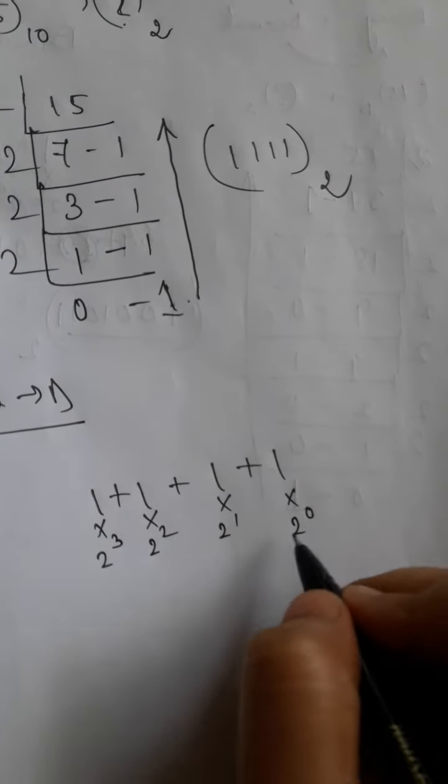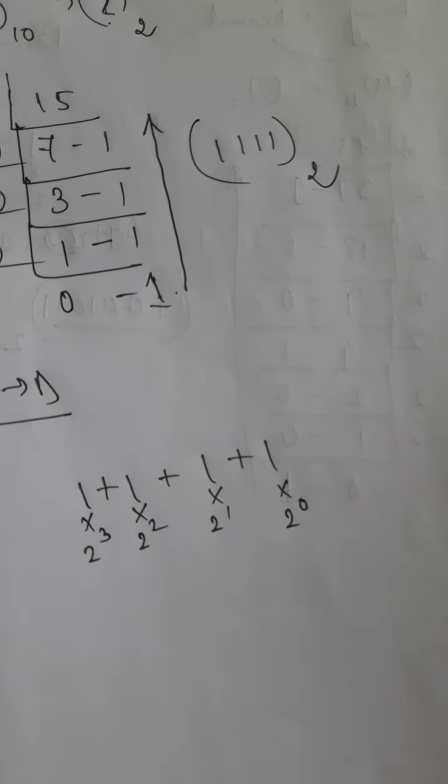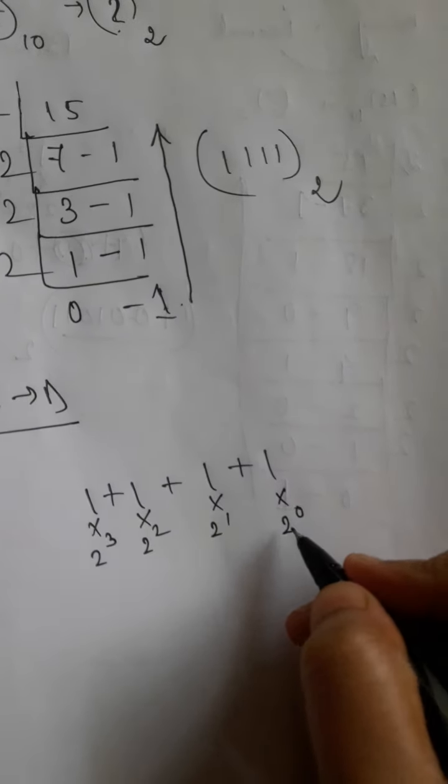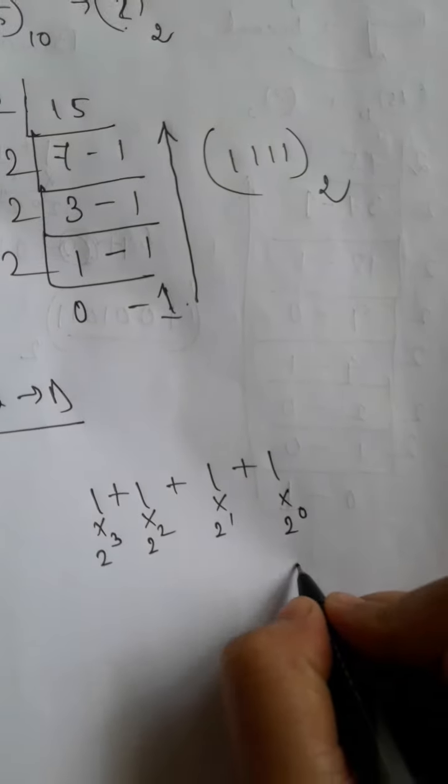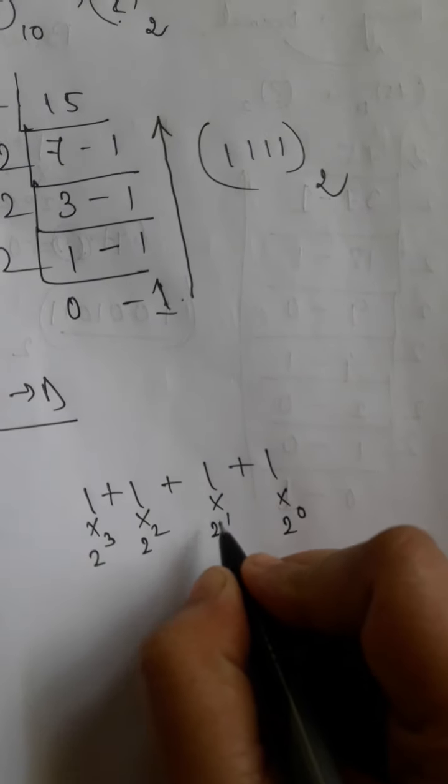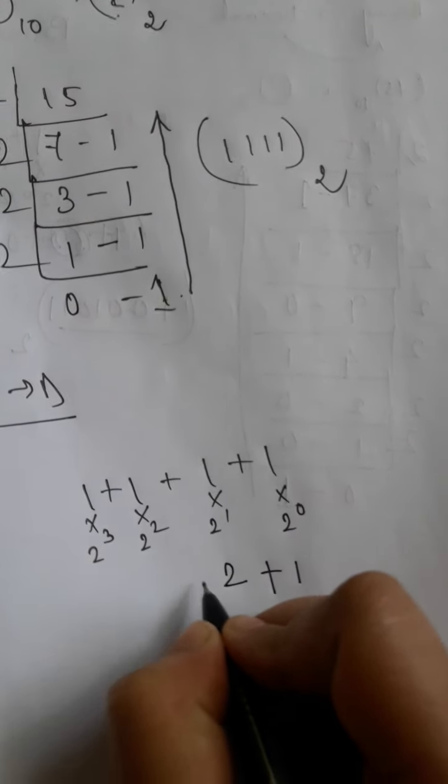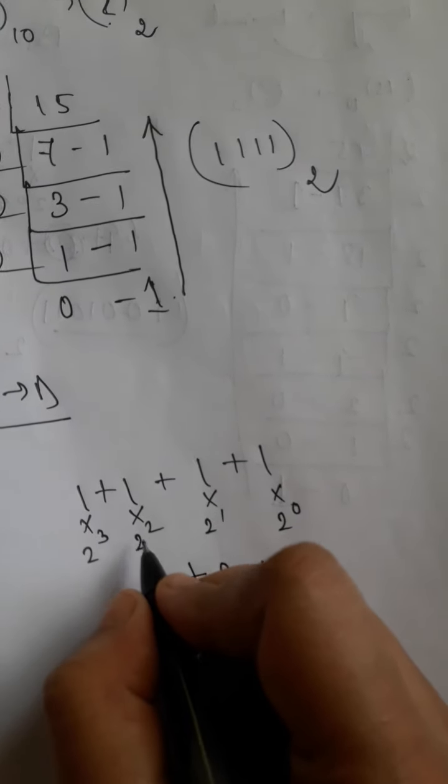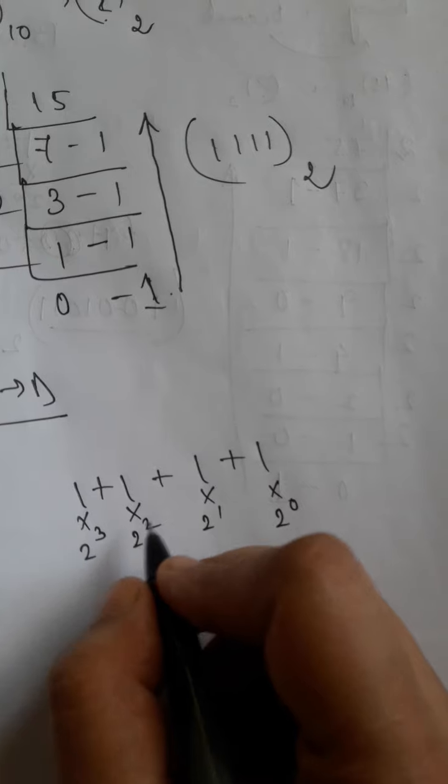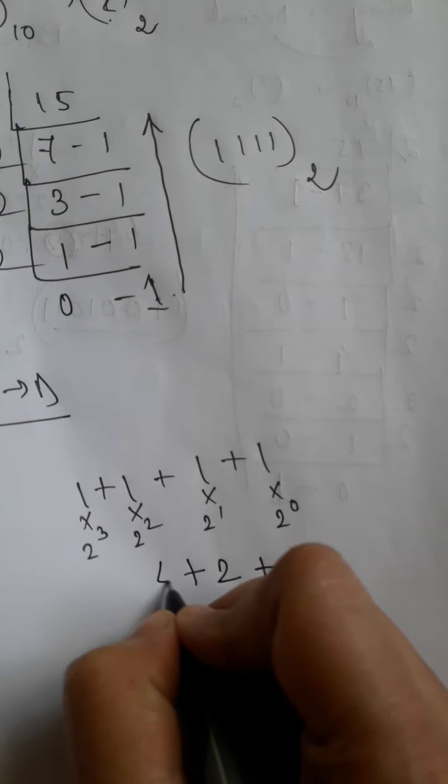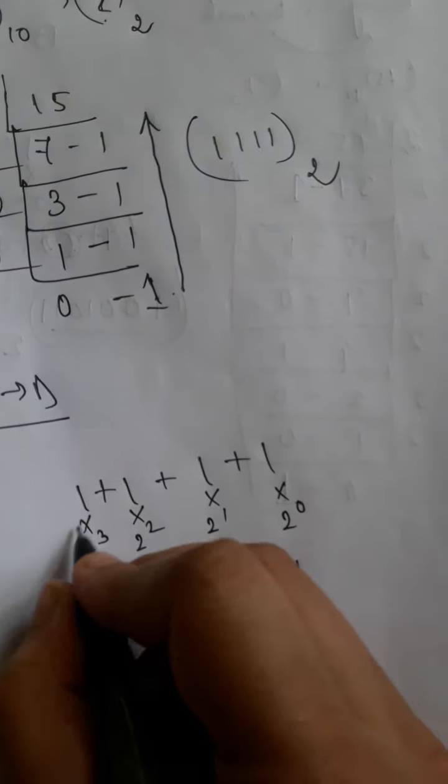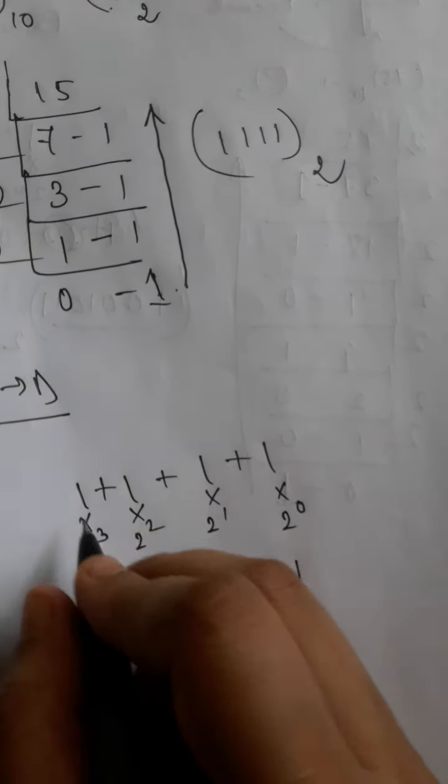2 to the power 0, any number to the power 0 will always be 1. So 2 to the power 0 value is also 1. 1 into 1 is 1 plus. 2 to the power 1 value is 2. 2 into 1 will be 2 plus. 2 square means 2 into 2, which is 4. 4 into 1 is 4 plus. 2 cube means 8. 8 into 1 is 8.